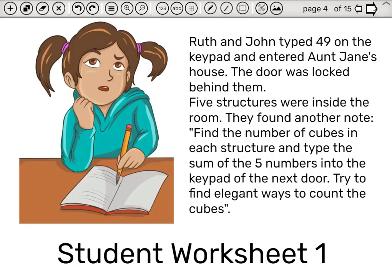Let's continue. Ruth and John typed 49 on the keypad and entered Aunt Jane's house. The door was locked behind them. Five structures were inside the room. They found another note: Find the number of cubes in each structure and type the sum of the five numbers into the keypad of the next door. Try to find elegant ways to count the cubes.